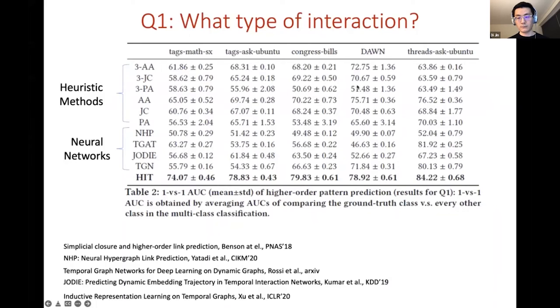We compare our model with 10 baseline methods. Heuristic baseline methods are the metrics previously used for lower order link prediction and recently got generalized to the higher hyper edge prediction case, such as three-way Adamic-Adar index. For the neural network based methods we adopt the previous state-of-the-art models for lower order temporal network representation learning. These models get node representations first and then we feed these node representations into the same decoder used as our model to make the final prediction.